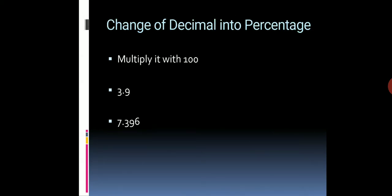Next is how we can change a decimal into percentage. We have learned how to change numbers into percentage. Now we will see how we can convert a decimal into percentage. The rule is the same — we multiply by 100.